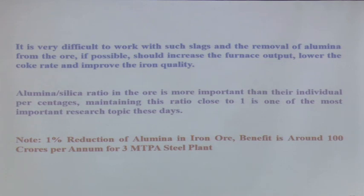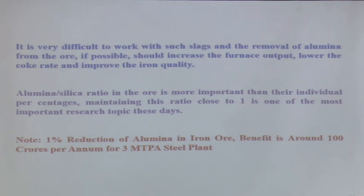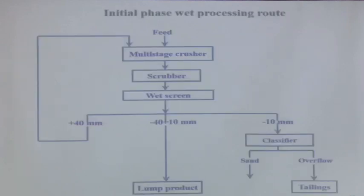One percent reduction of alumina in iron ore gives a benefit of around 100 crores per annum for a 3 million ton per annum steel plant. Even if any process can guarantee removing 2 to 3 percent alumina, it will be economically viable. Per million tons of steel, the saving is around 33 crores. This data is somewhat old and the figure could be higher now depending on market prices.